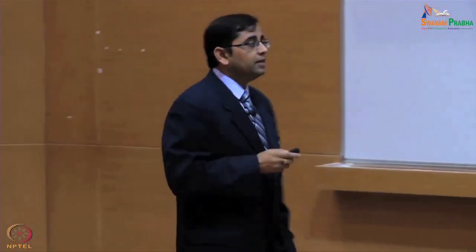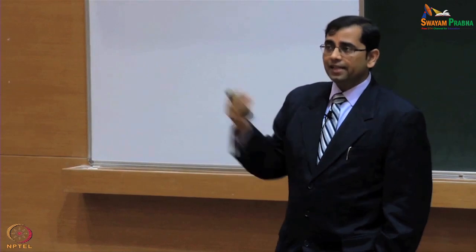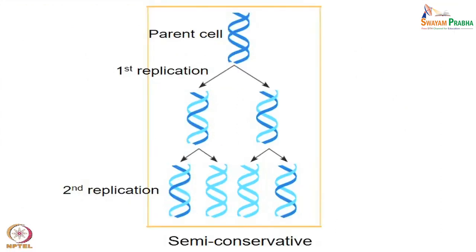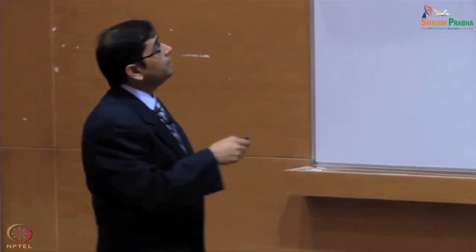Now let us consider DNA replication — how multiple copies of DNA are made inside the cell. Since DNA is double-stranded, three hypotheses were proposed: dispersive, semi-conservative, and conservative. In the semi-conservative model — the most popular — after the first replication, one dark parental strand remains and a new light strand appears. In the second generation, one dark and one light form remain together, and a new light strand is synthesized again, forming another double helix.